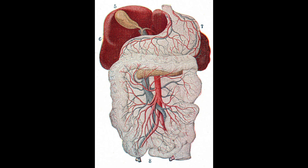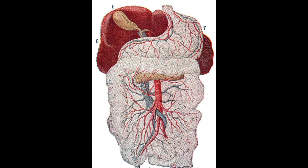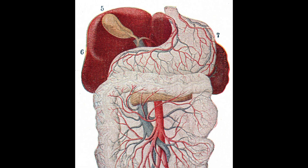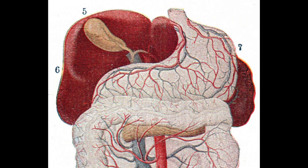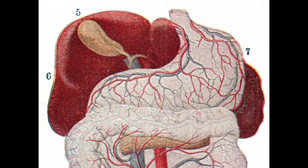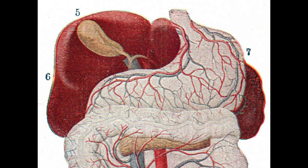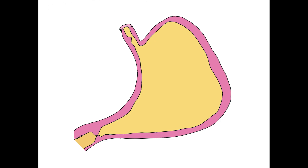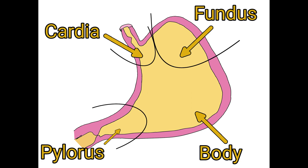The stomach is the site of acid and mechanical digestion. The acid is required to provide optimal conditions for enzymes that break down proteins. The stomach can be divided into four anatomic regions: the cardia, the fundus, the body, and the pylorus.